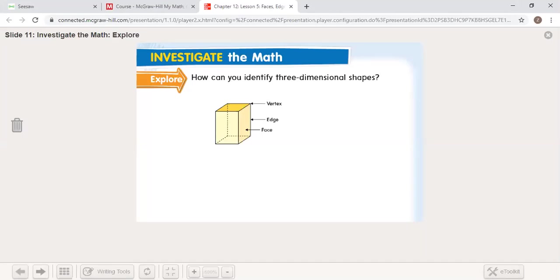All right, so we're going to investigate the math. How can we identify three-dimensional shapes? When we're looking at a cube here, the flat side is a face. The sides of a 2D shape are now edges on a 3D shape, and where the edges meet and come to a point is called a vertex.